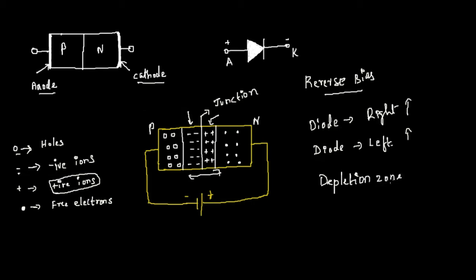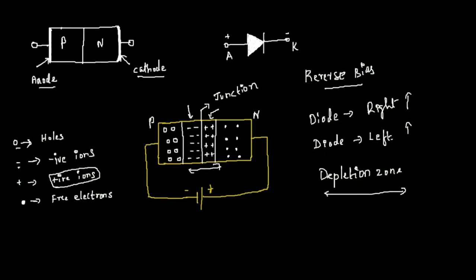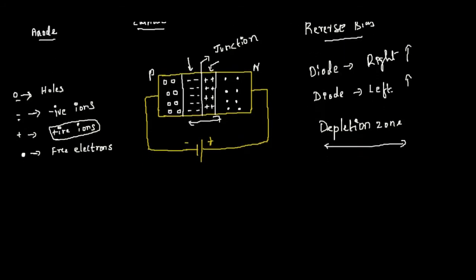When the depletion zone gets broader and broader, the barrier voltage increases. If the barrier voltage increases, the majority charge carriers of the P-type and N-type are unable to make a move. If they are unable to make a move, they cannot create diffusion current.